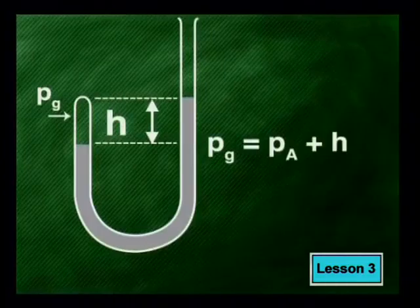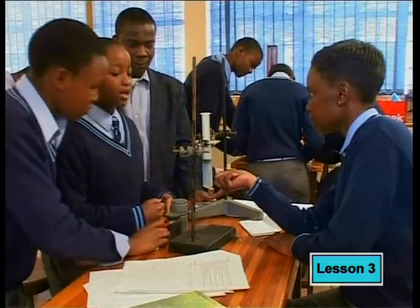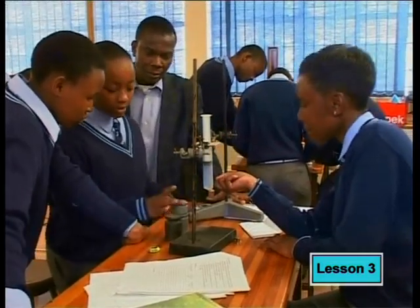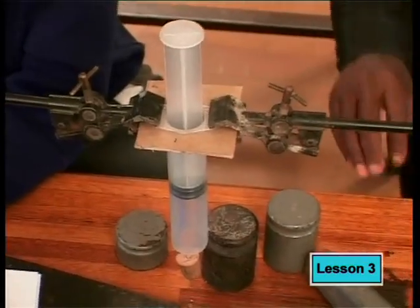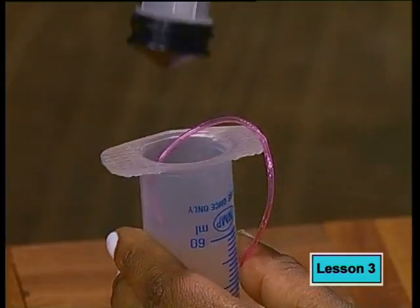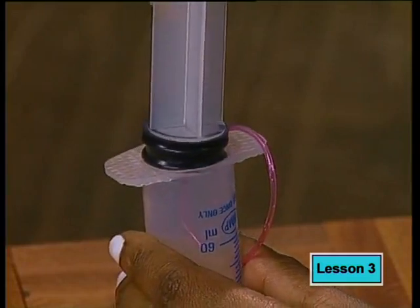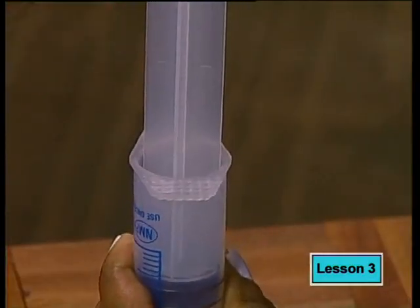When the level of mercury is lower in the closed tube than in the open tube, the pressure of the gas is greater than atmospheric pressure: PG equals PA plus H. The apparatus given to the next group consists of a syringe, mass pieces, and a piece of thin wire. The barrel of the syringe has been sealed. When the plunger of the syringe is inserted into the sealed barrel, a thin piece of wire is attached to the plunger. Once the plunger is depressed to about 40 milliliters, the wire is removed.